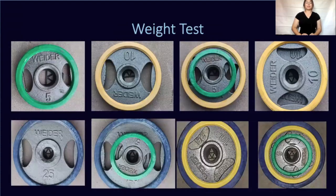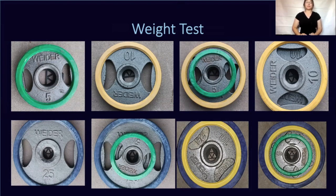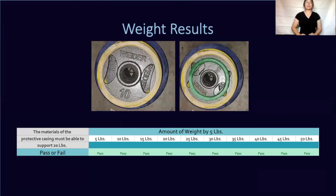Next is the weight test. I have a set of pictures where the weight increases by five pounds, from five pounds going up to 10, 15, 20, 25, 30, 35, and 40, each test showing the durability of the prototype material. The final two pictures show a 45-pound and 50-pound weight placed on top of the prototype material. After testing each weight, my prototype passed all of the weight tests, ensuring it can withstand and support 20 pounds in case of any mishaps.